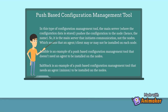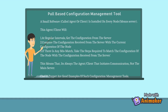SaltStack is an example of a tool-based configuration management where a small software called an agent or client is installed on every node. This agent or client will: 1. At regular intervals, get the configuration from the server. 2. Compare the configuration received from the server with the current configuration of the node. 3. If there is any mismatch, take the steps required to match the configuration of the node with the configuration received from the server. This means it is always the agent or client that initiates communication, not the main server.